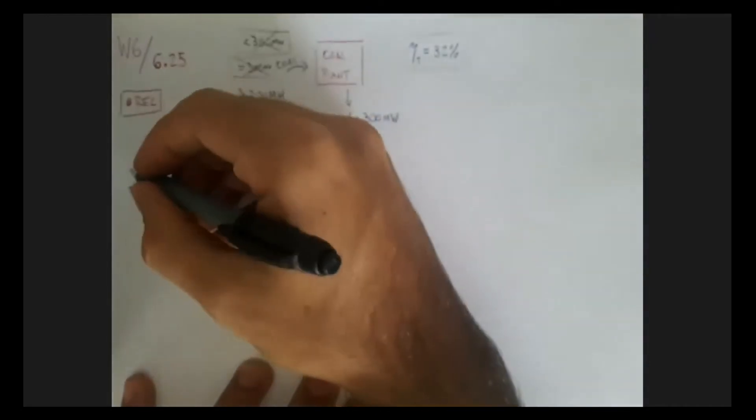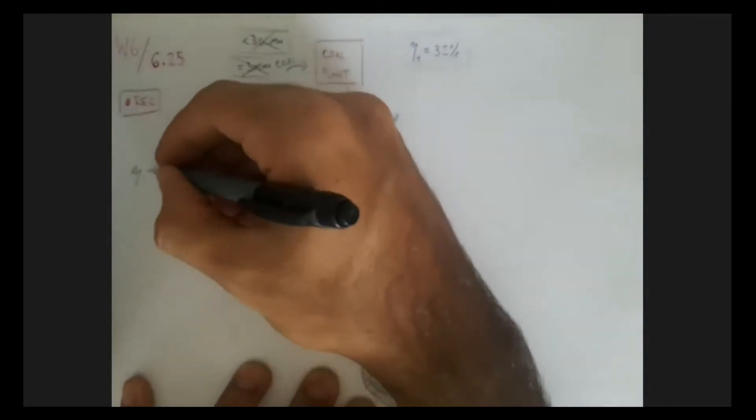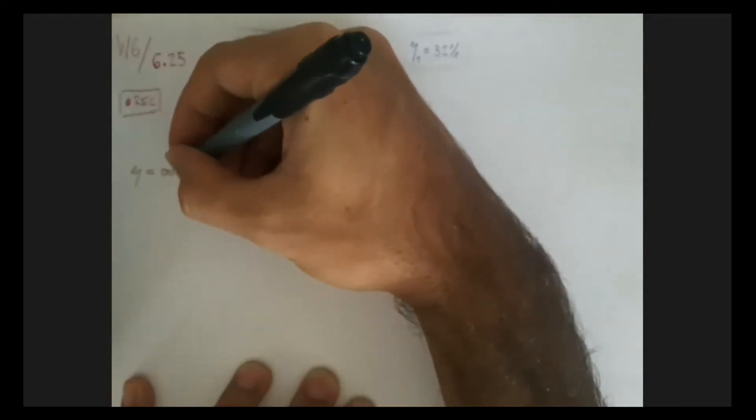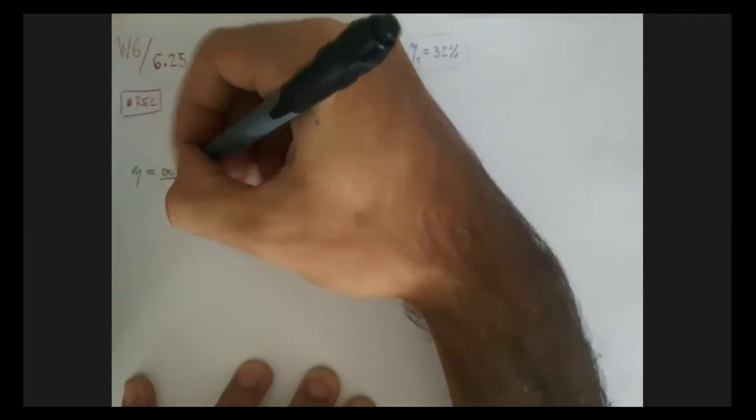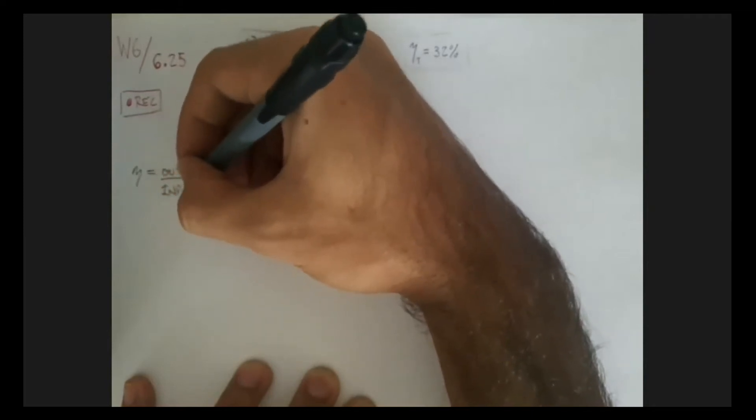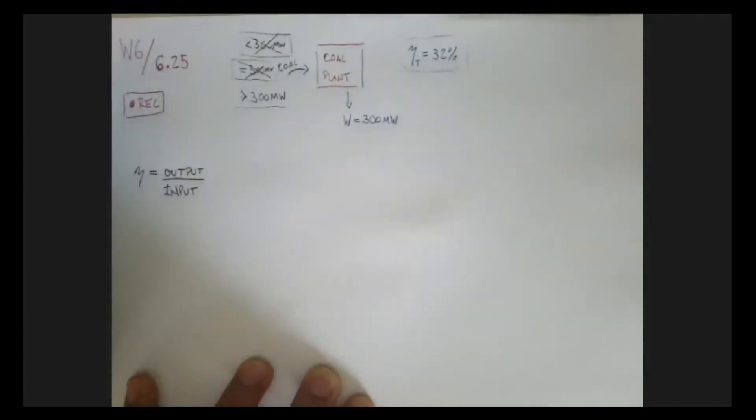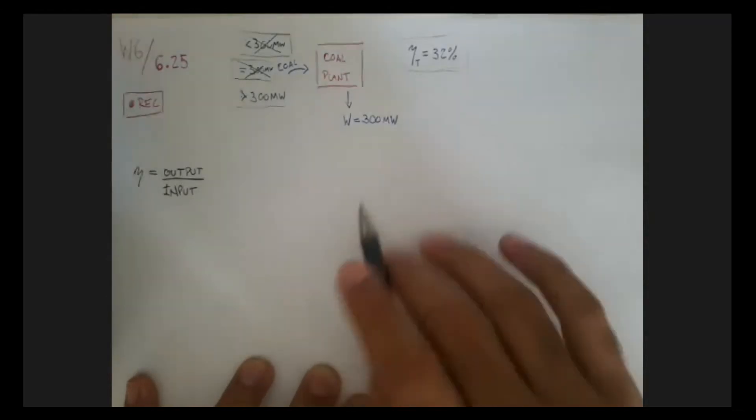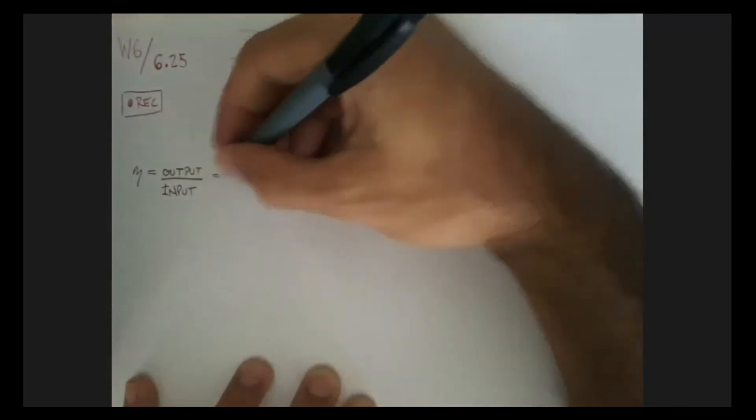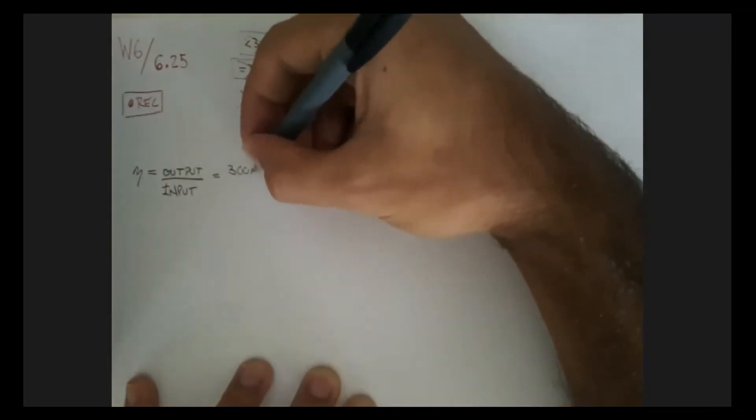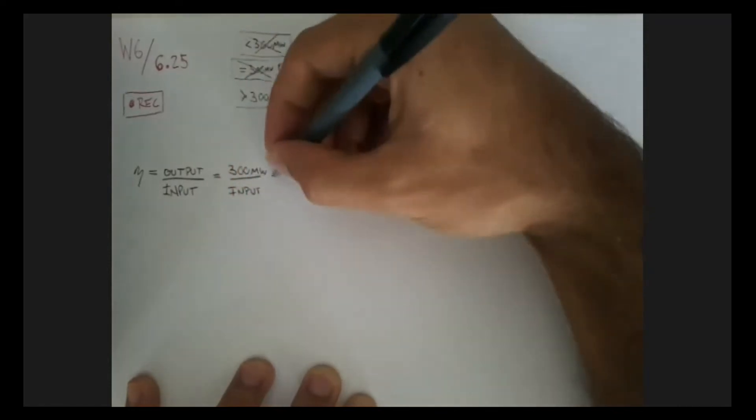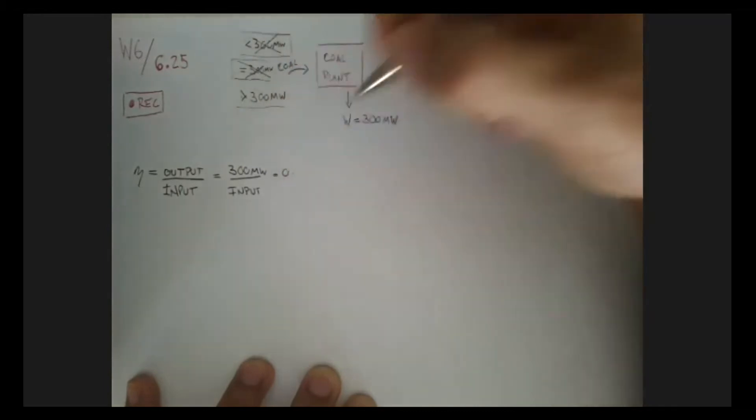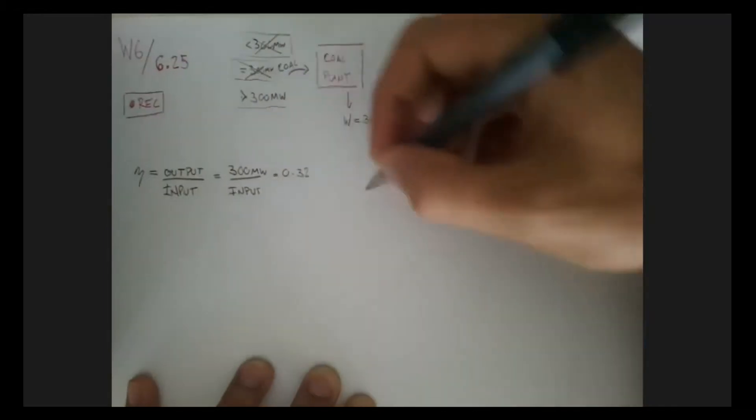So the efficiency is just a measurement, it's always the same thing. The ways you can calculate it can vary according to your situation, but the idea is always the same. It's how much you get as an output in relationship to how much you had to input. In our case, the output here is clear, it's the 300 megawatts, and our input we don't know, but we know that this has to be equal to 0.32, it's 32%.